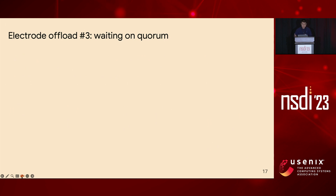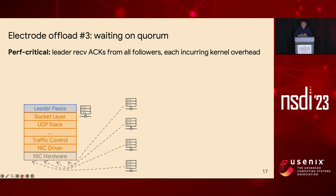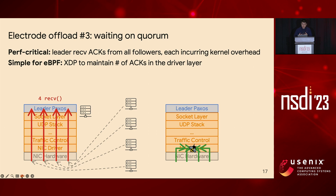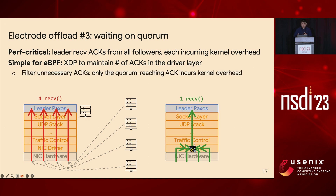After acknowledging, the leader node needs to receive ACKs from all followers, and each ACK incurs kernel overhead. In our example, the leader needs to call the receive function four times to collect all ACKs, even for those that do not reach quorum. To remove this overhead, Electrode maintains quorum information in XDP and implements wait-on-quorum there. The eBPF program in the driver layer counts how many ACKs it has received, and only forwards the quorum-reaching ACK to the user-space Paxos. This filters out unnecessary ACKs and only allows the quorum-reaching ACK to incur kernel overhead. We actually use a bitset instead of a counter to avoid double counting caused by message retransmission.